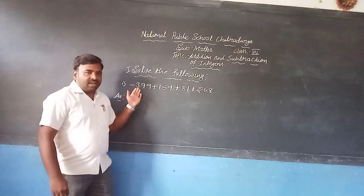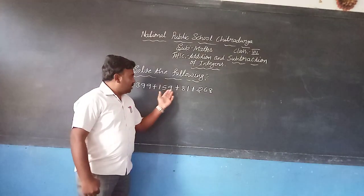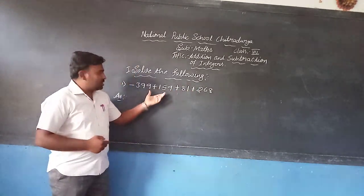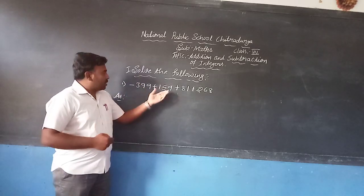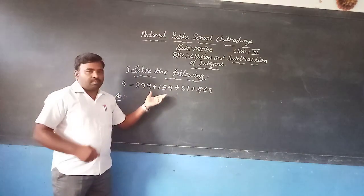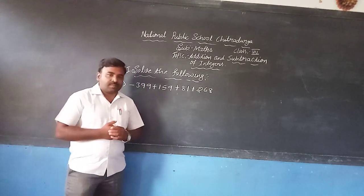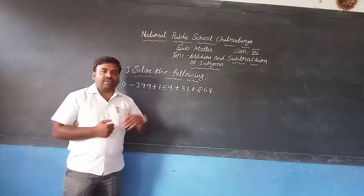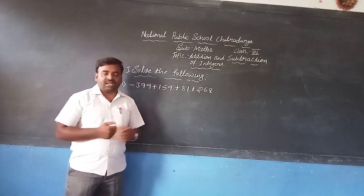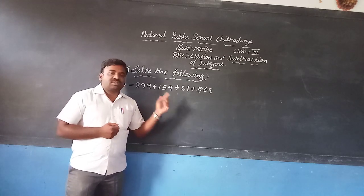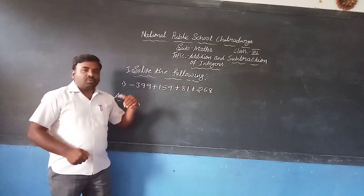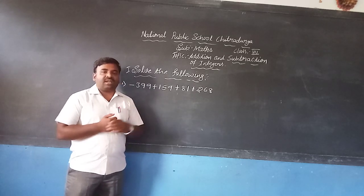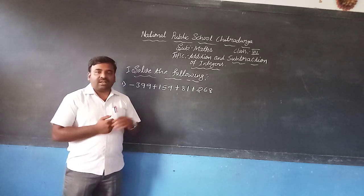Here is the first problem: minus 399 plus 159 plus 81 plus 268. By using the tutorial rules, solve this problem. The first rule says: if two or more integers are in the same sign, then find the sum and attach the same sign. Second rule: if two or more integers have a different sign, then find the difference and attach the greater number's sign.